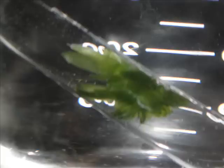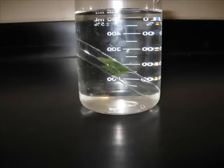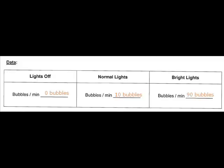Here is the setup for the lab. You can see the plant inside a test tube. That test tube is full of water with a little bit of baking soda, and then the test tube is placed inside of a beaker, which holds the test tube so that you don't have to hold it and so that you can view the bubbles that the plant will make. Your first test is to have all of the lights off — we did this for five minutes. You should be looking for bubbles coming out of the stem of your plant. We found that zero bubbles came out of the plant with all of the lights off in the room. Please record this in your data chart.